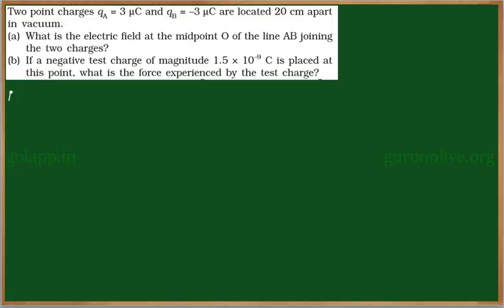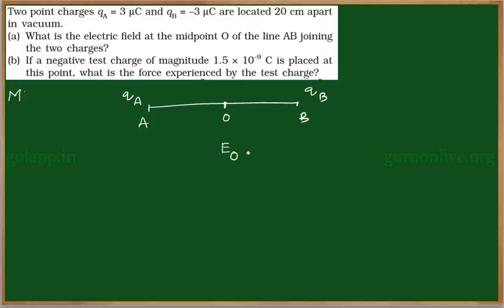There is a line segment A and B whose midpoint is O. We have kept two charges QA and QB at positions A and B respectively. According to the problem, we need to find out the electric field at O, and if we keep a small charge Q at position O, we need to find out the force experienced by that small charge due to these two charges.